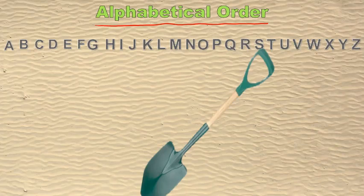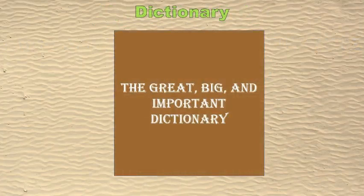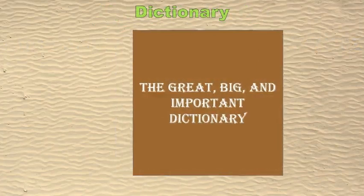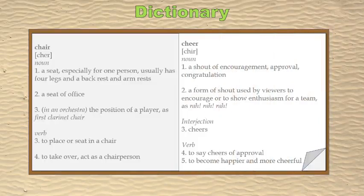Let's open up our first book — "At the Beach: The Great Big and Important Dictionary." Here we have the word and many different things listed on the pages. The word we are looking up is called the entry word.